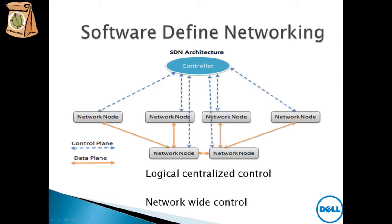On the other hand, we have software-defined networking. In the SDN architecture, what we have done is centralized the control so there is just one controller. There is no longer a controller residing on the network devices. This provides centralized control, centralized policies, centralized configuration, and easy management. All these devices can also be manipulated through the controller using APIs.